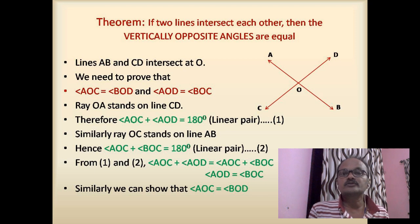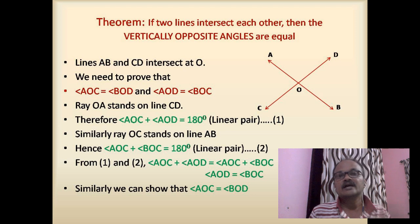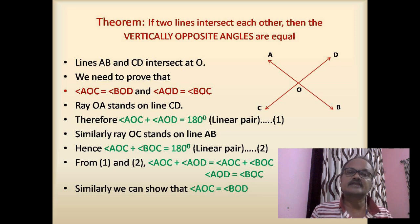Combining the two equations: angle AOC plus angle AOD equals angle AOC plus angle BOC. Therefore, angle AOD equals angle BOC. Similarly, taking the other side, we can prove that angle AOC equals angle BOD. Thus, vertically opposite angles are equal.